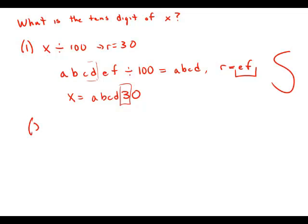Now forget about that. Statement number two. Statement number two tells us when x is divided by 110, we get a remainder of 30. Well, dividing by 110 is not nearly as neat and clean a process as dividing by 100.